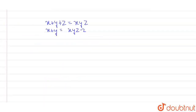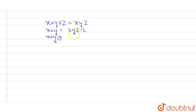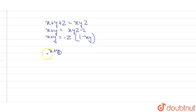Now if I take minus z common from the right side, this will become: x plus y is equal to minus z times (1 minus xy). So the value of (x plus y) divided by (1 minus xy) is equal to minus z.